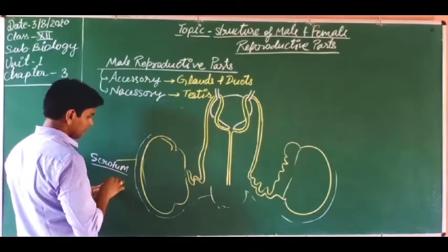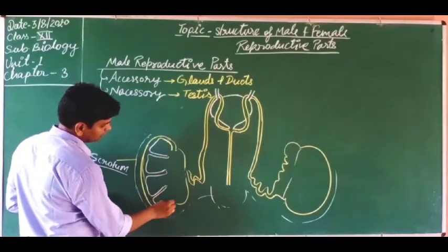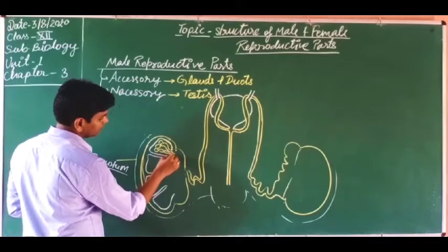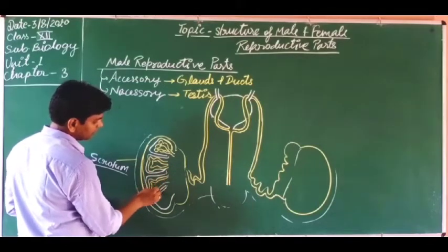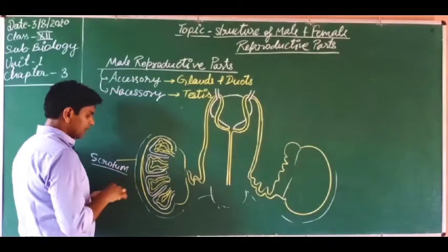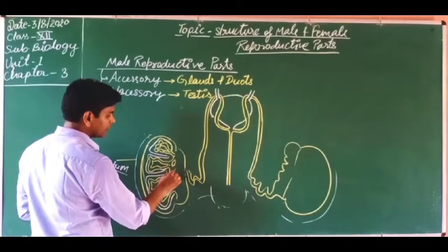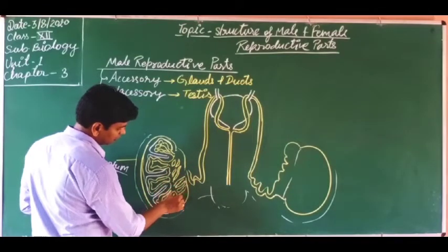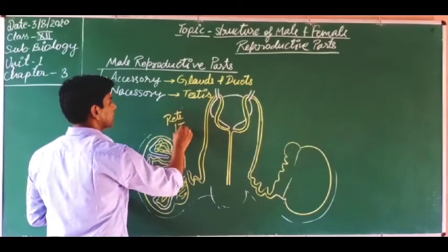Inside each testicular lobule, a coiled tube is present. This coiled tube is the seminiferous tubule. All seminiferous tubules come outside from the testicular lobule and form a network of ducts. This network of ducts is known as the rete testes.